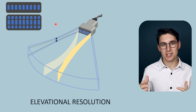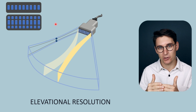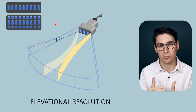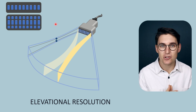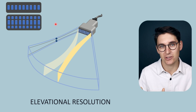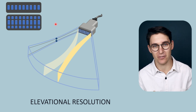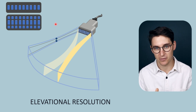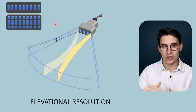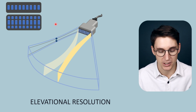When comparing ultrasound resolution planes, axial resolution is the best. It is followed by lateral resolution, which is worse than axial but better than elevational. Elevational resolution is the worst resolutional plane in ultrasound imaging.